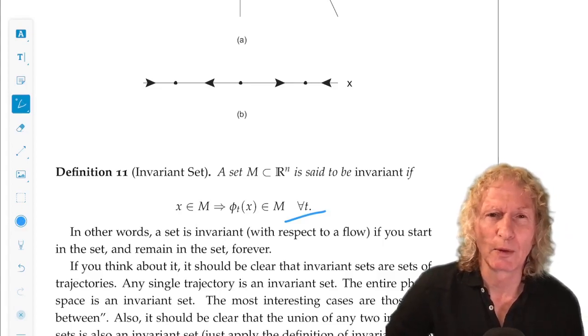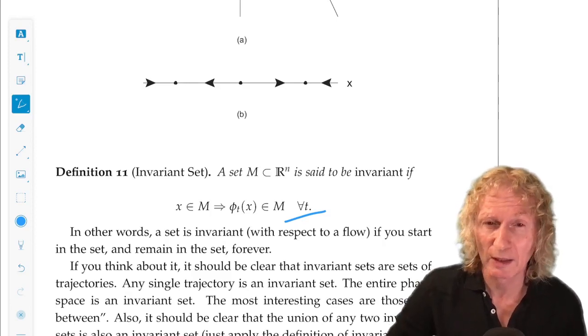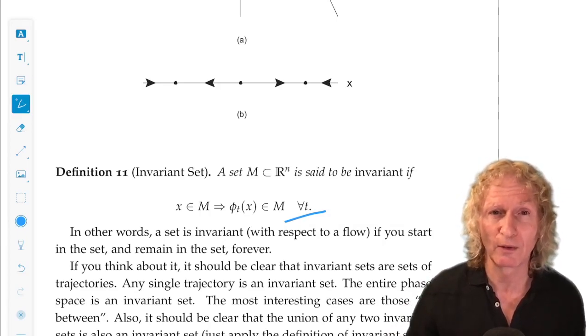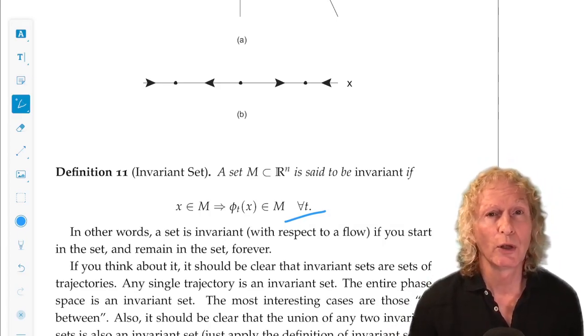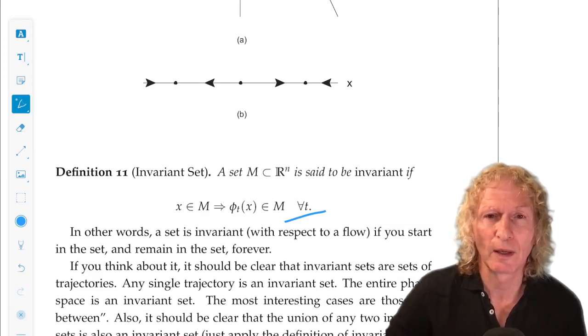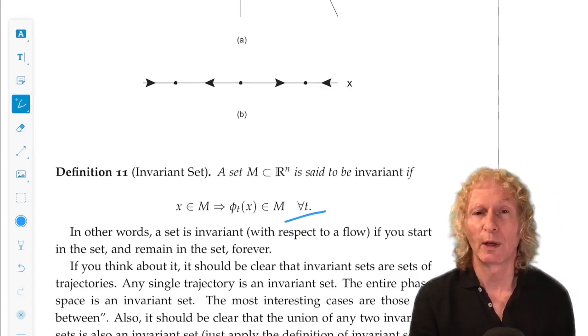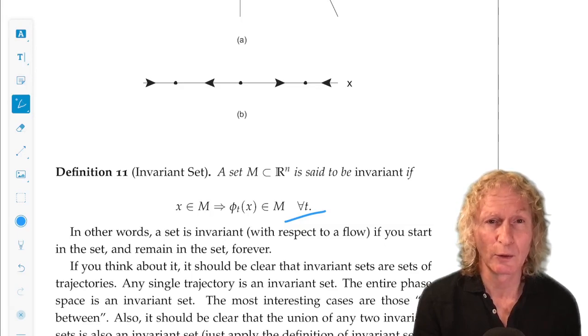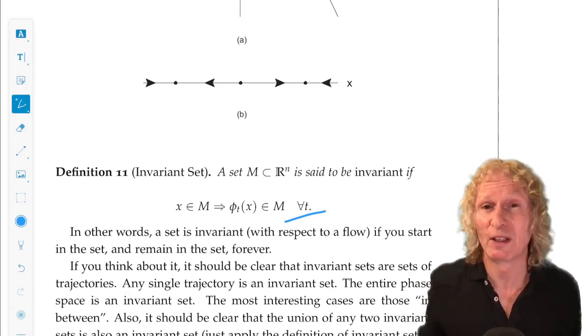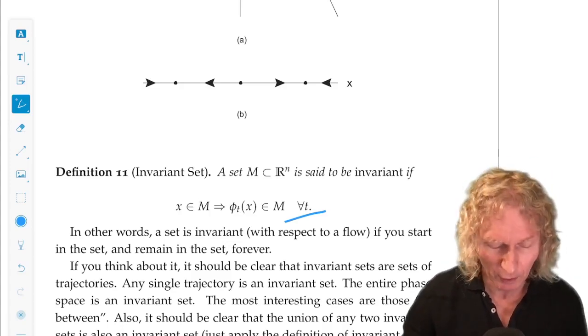Right now, one could play games with the invariant set. Are they closed? What's the dimensionality? And various things. But right now, I just want to keep it very general about invariant set. One could talk about invariant sets with a particular direction of time. Positive invariant sets. So, a set would be positive invariant if you start in it and you stay in it for all time between zero and infinity. And you could talk about negative invariant sets and so on.